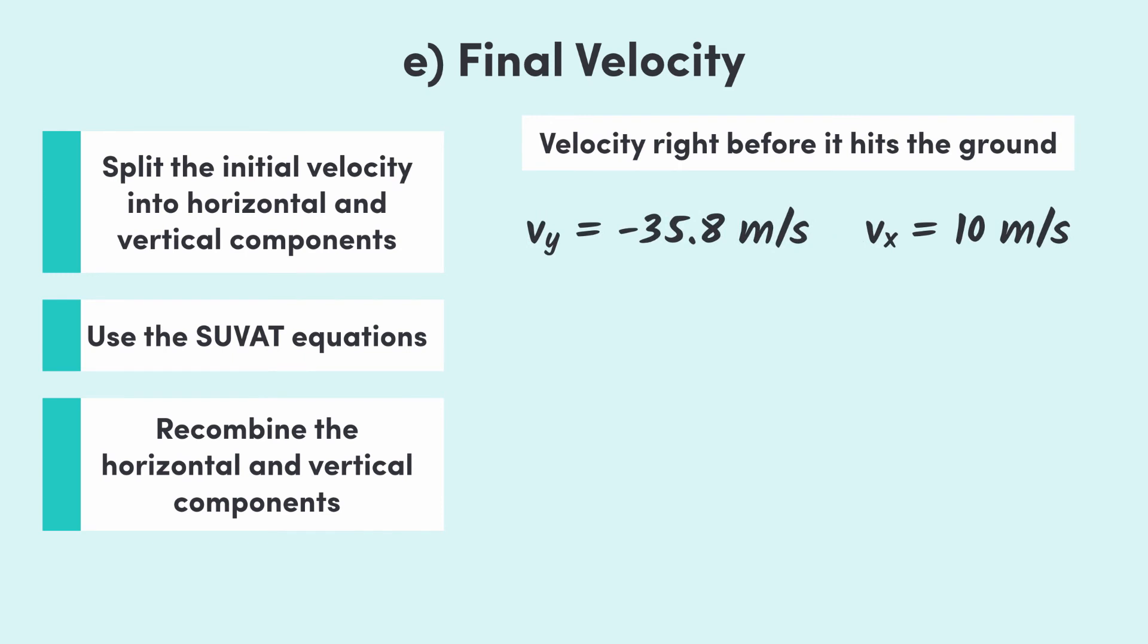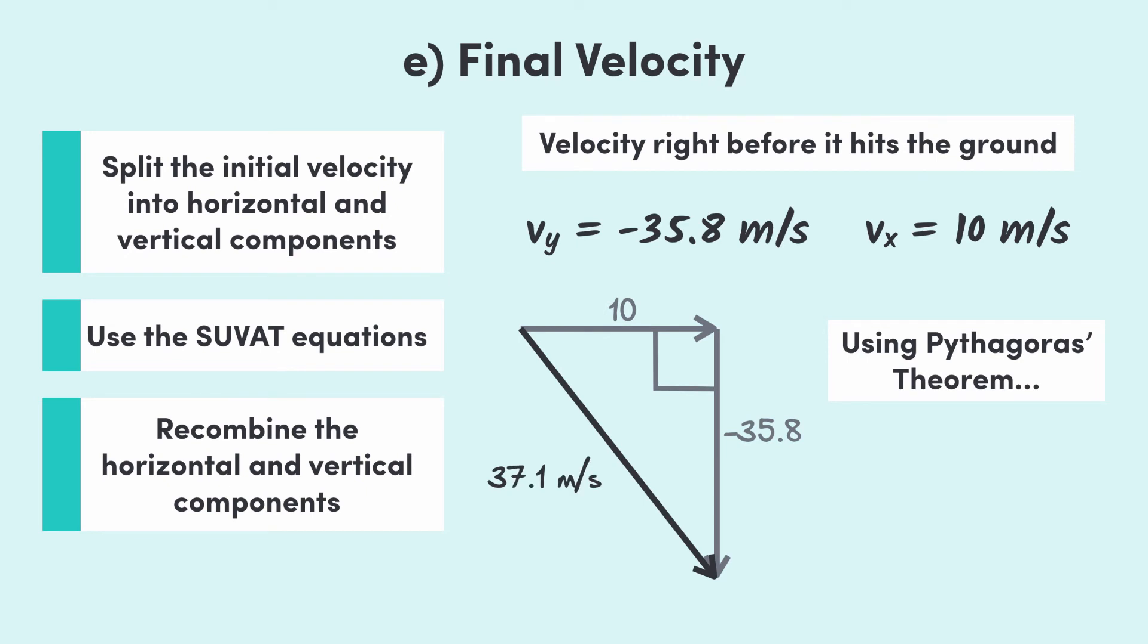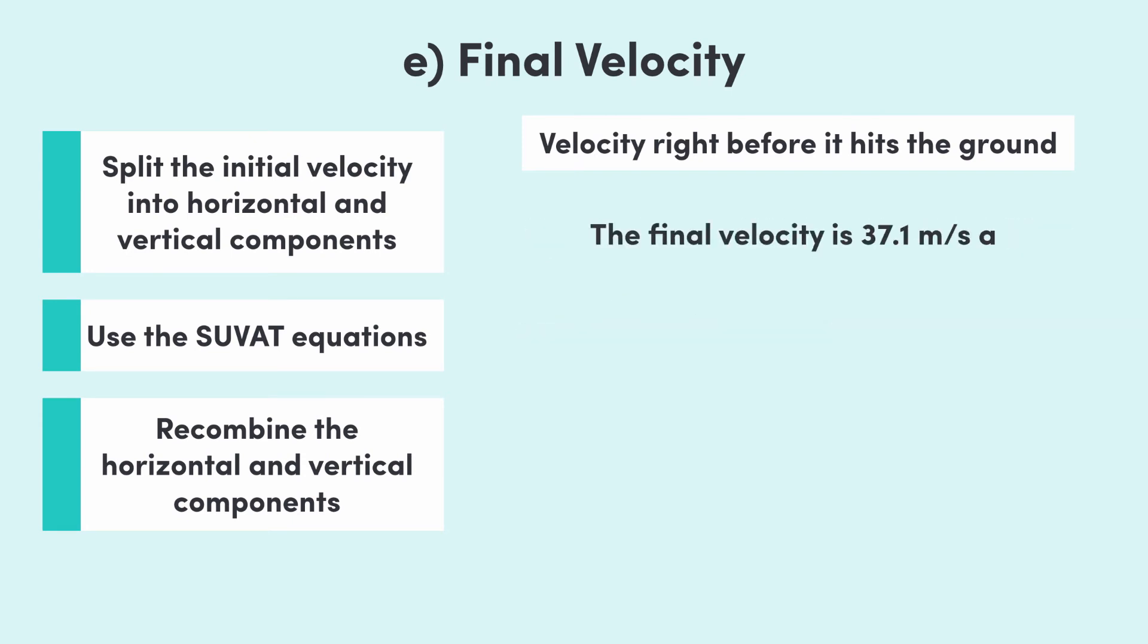Now, using step 3 of the method, we can draw in the horizontal and vertical velocities like this with the final overall velocity here. Using Pythagoras' theorem, this velocity comes out to be 37.1 meters per second. Then, the angle here can be found using right angle trig and comes out to be 74.4 degrees. So, our answer to part E is 37.1 meters per second at 74.4 degrees below the horizontal.